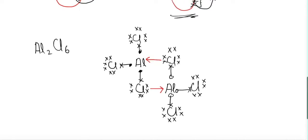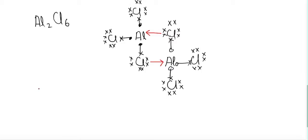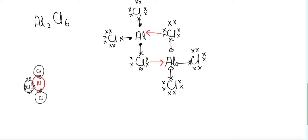Drawing the dot-and-cross structure of Al2Cl6 is straightforward. Represent aluminum in red with three electrons, and draw three chlorine atoms each with seven electrons — remember to draw all remaining electrons or you will lose marks. This gives the first AlCl3 molecule. Then draw the second AlCl3 molecule similarly, with the second aluminum also having three electrons in its outermost shell and three chlorines.